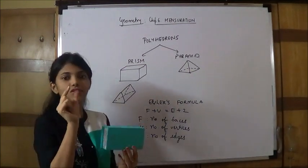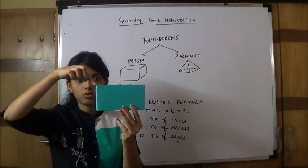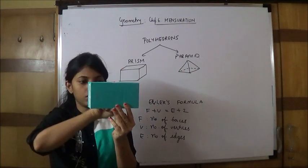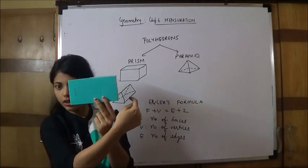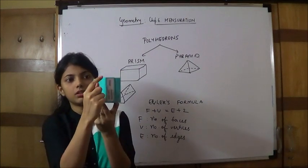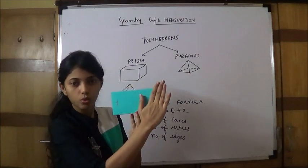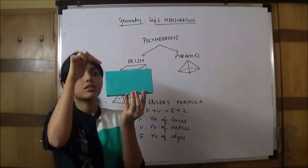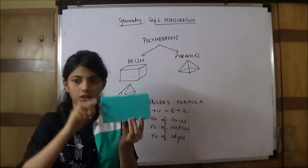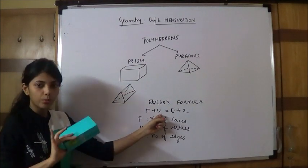And edges are the sides: 1, 2, 3, 4, 5, 6, 7, 8, 9, 10, 11. So edges are the sides. Faces is this whole part, and vertices is the exact point. Now, this is the formula for any polyhedron.